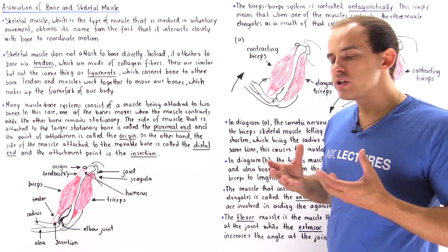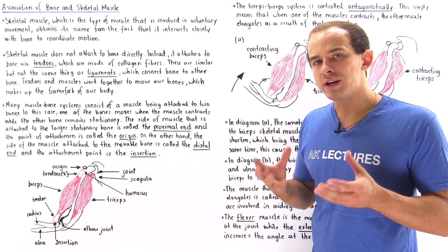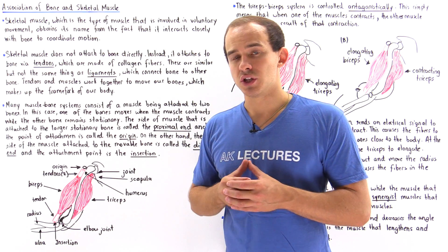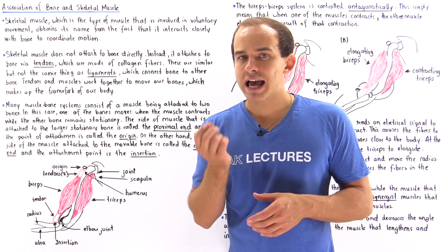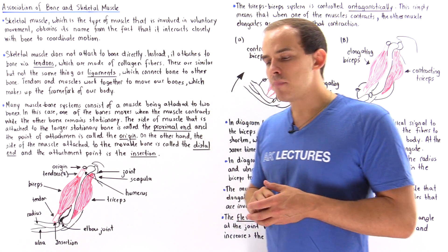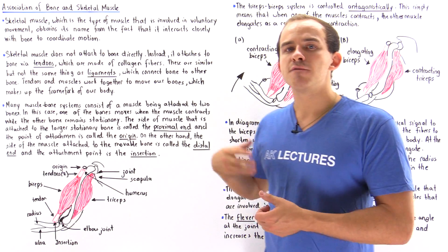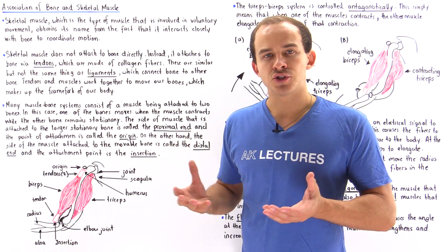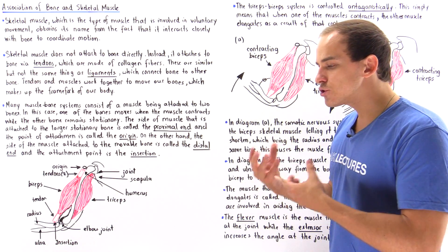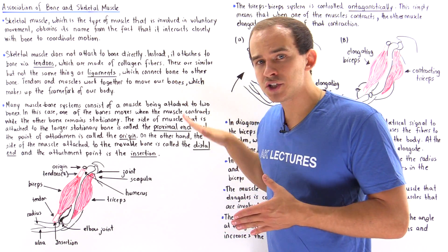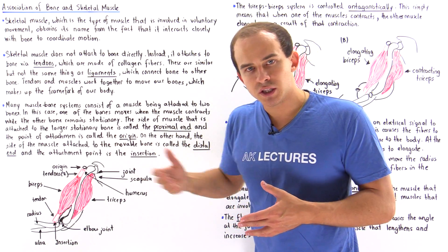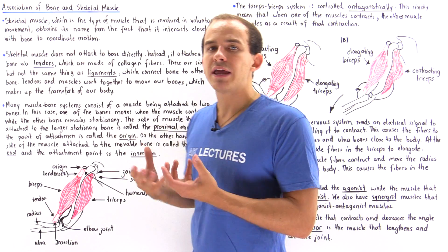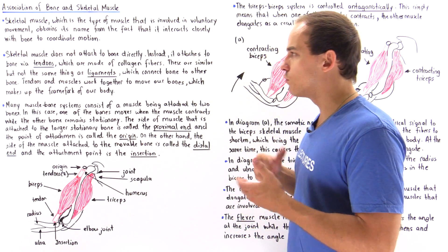Bone does not actually initiate voluntary motion. Bone interacts with skeletal muscle, and it's the contraction of the skeletal muscle that causes the movement of our bone, which creates our voluntary motion — motion that we can consciously control. It's the interaction between our bone and the skeletal muscle, which is ultimately controlled by our nervous system, that allows us to move in any way that we wish.